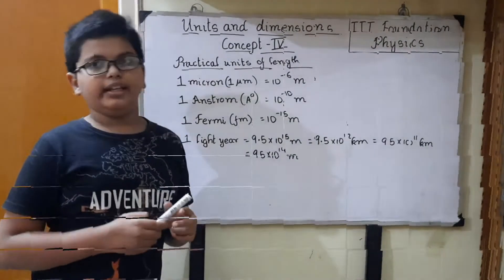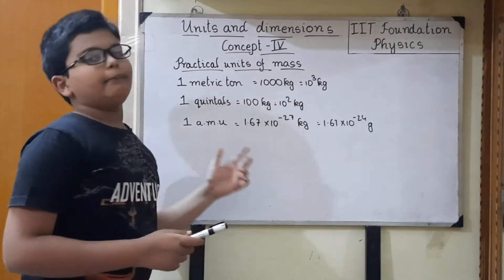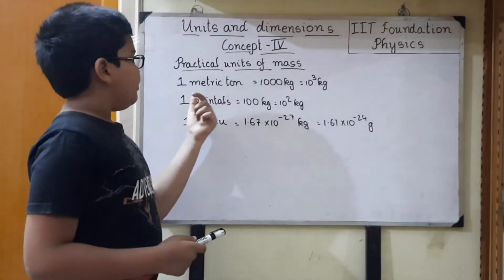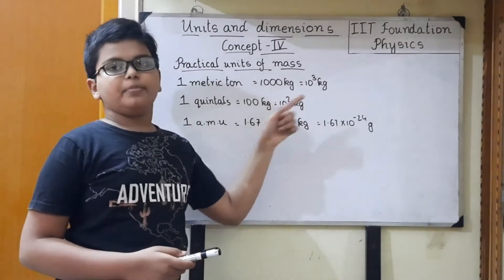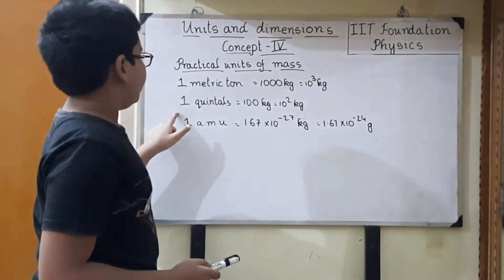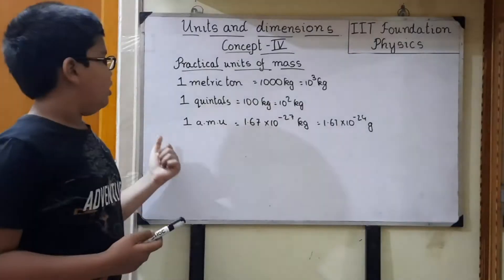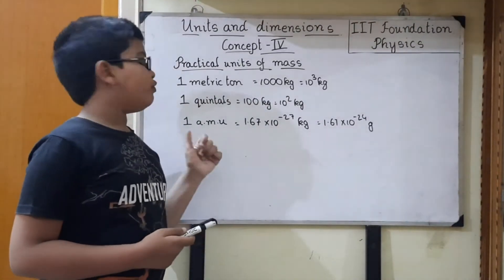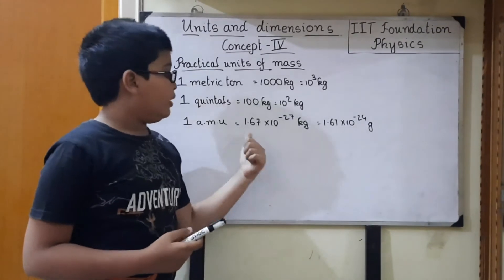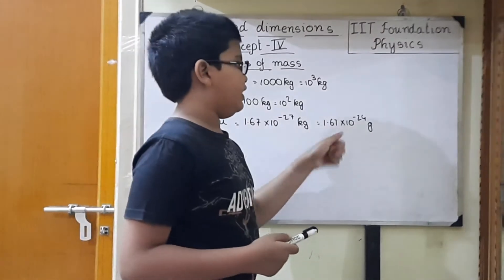Next, some practical units of length for mass. There are many practical units for mass; these are the frequently used ones. 1 metric ton equals 1000 kg, which is 10 power 3 kg. 1 quintal equals 100 kg, which is 10 squared kg. 1 amu (atomic mass unit), used in chemistry, equals 1.67 × 10 power minus 27 kg, which can also be written as 1.67 × 10 power minus 24 grams.